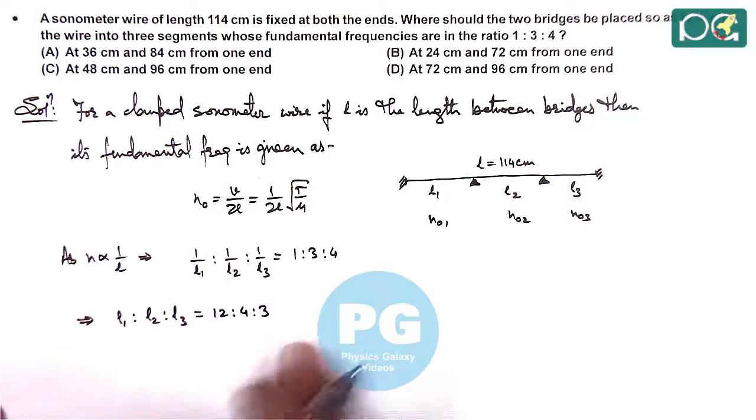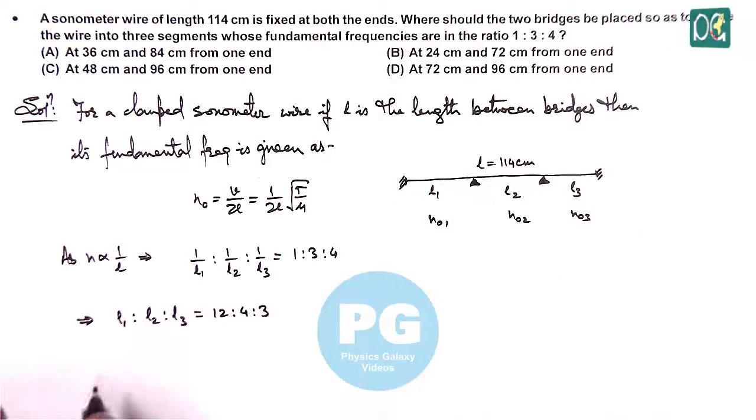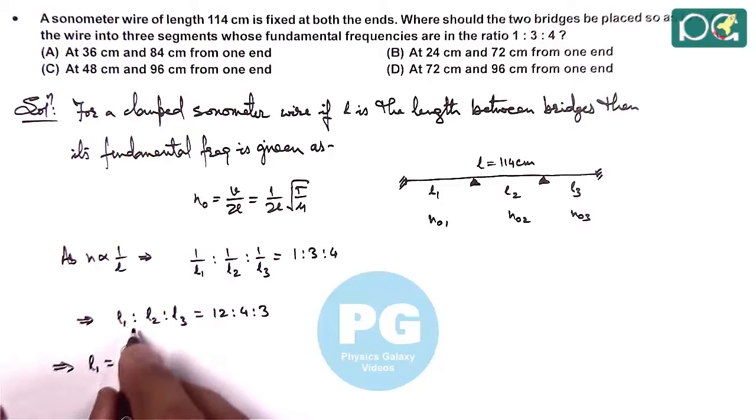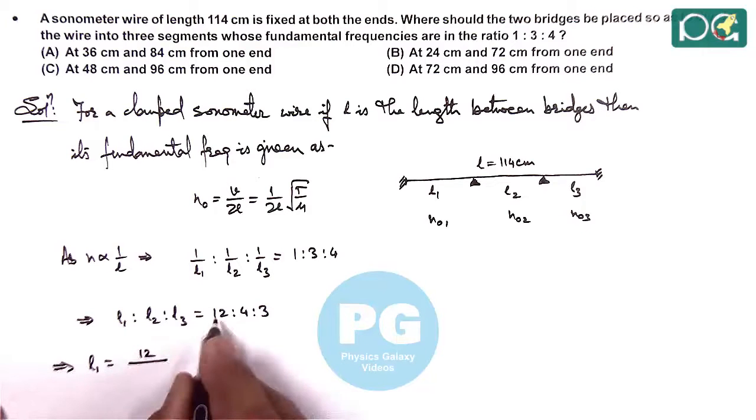From here, the sum of the three lengths is 114, so we can write L₁ equals 12 divided by (12+4+3) which is 19, multiplied by 114. This comes out to be 72 centimeters.